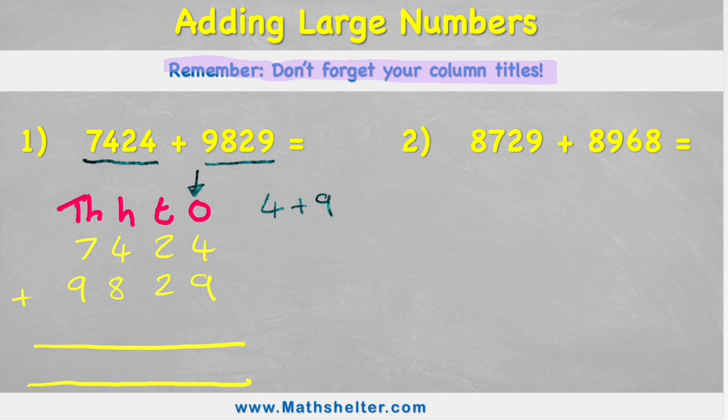Now when I add 4 to 9, I obviously get 13. And my 13 is broken down into a 10 and a 3. Three ones and one 10.